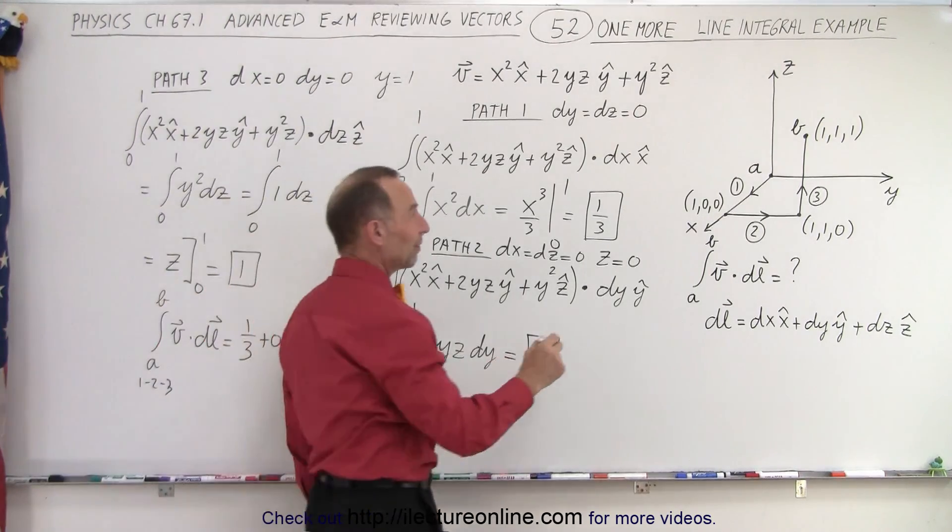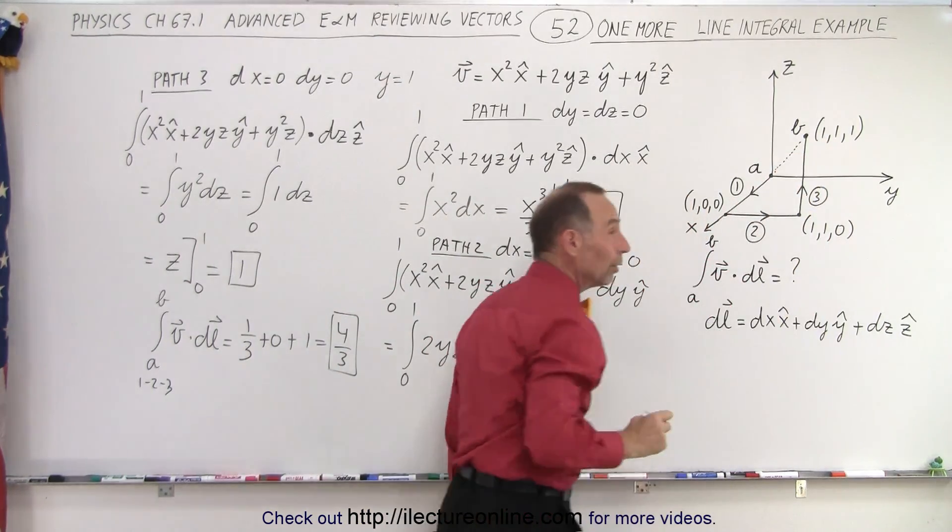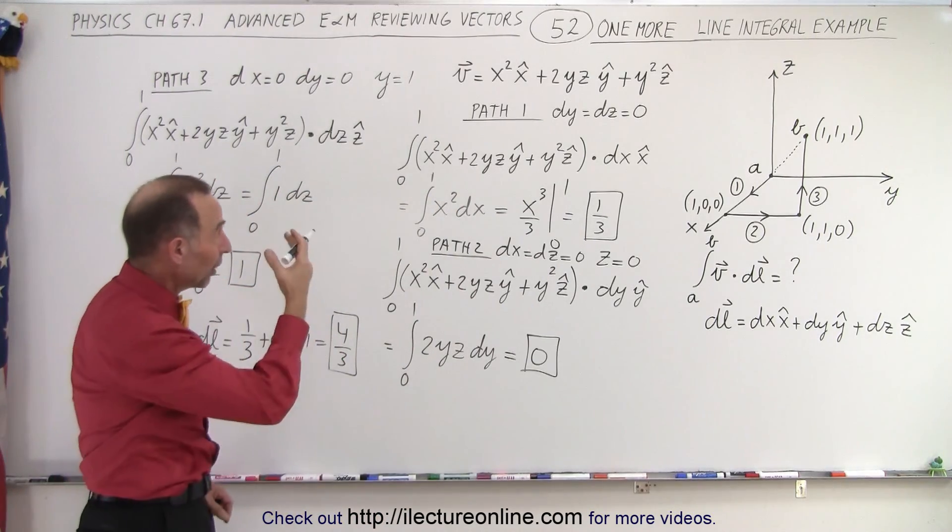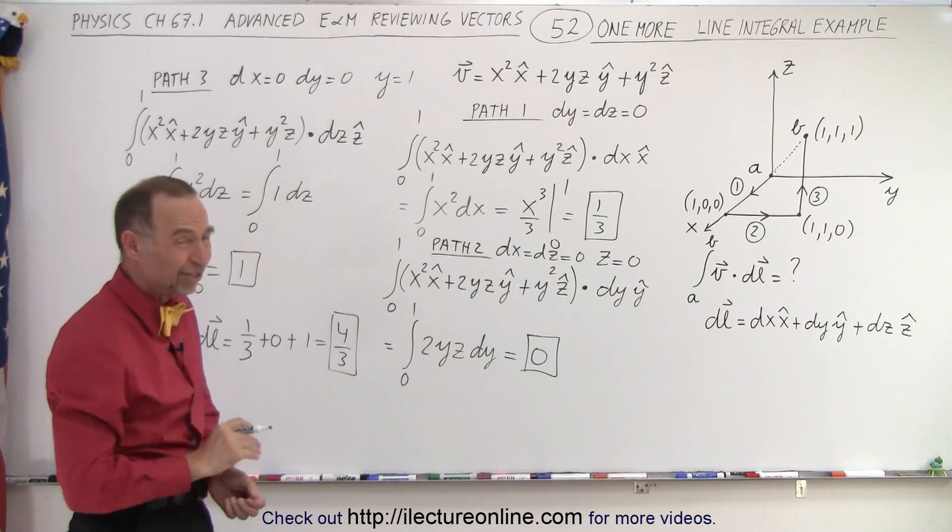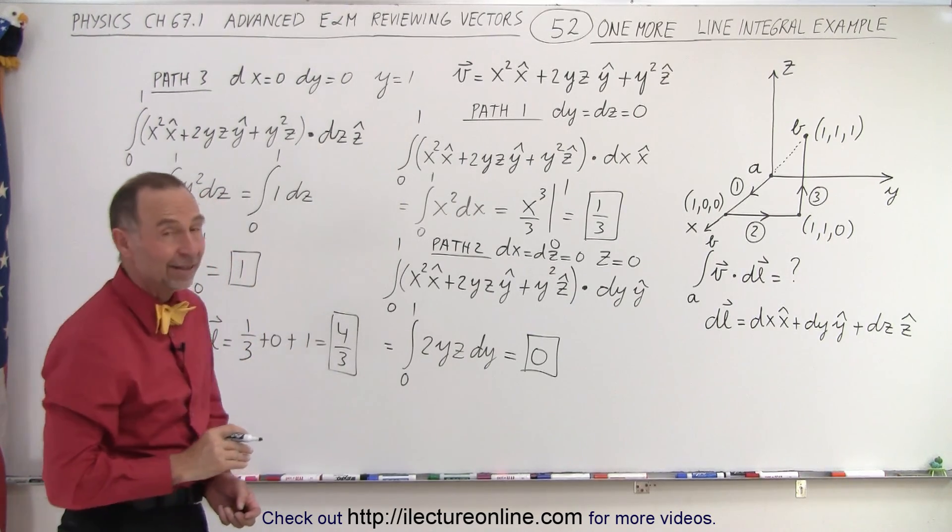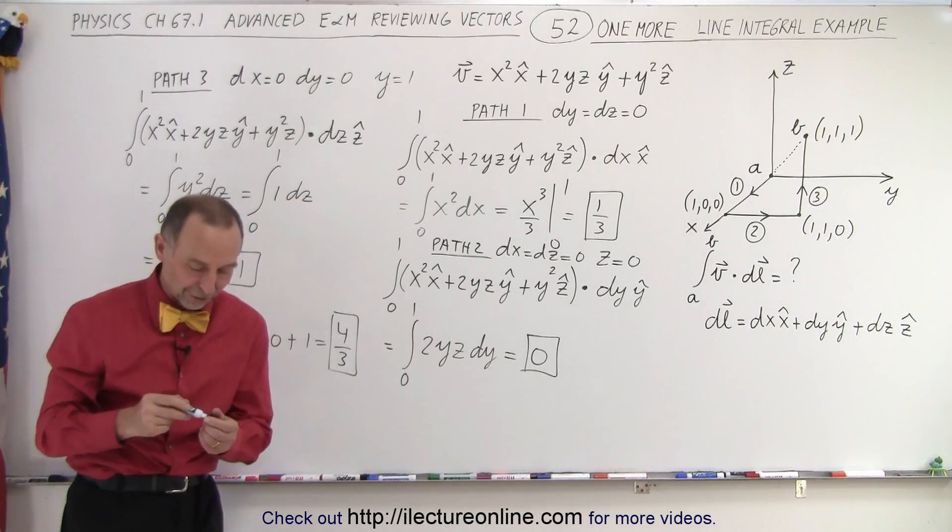Now what would happen if we traveled there directly from there to there? As we've seen before, we probably will get a different value, but not guaranteed. Depends upon whether or not that's a conservative or non-conservative field. So let's try it directly from the origin to point b and see if we get something different. Stay tuned and we'll do that on the next video.